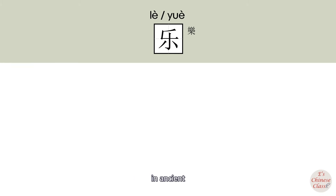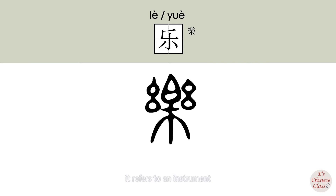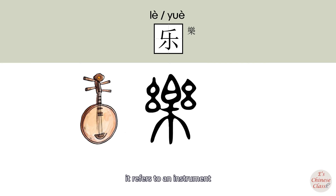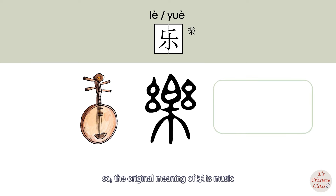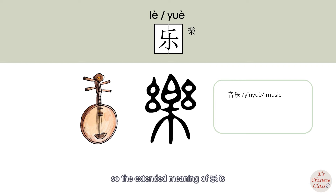In ancient Chinese, 乐 was written in a form that refers to an instrument. So the original meaning of 乐 is music. People often play instruments when they feel happy, so the extended meaning of 乐 is happy, glad — 快乐.